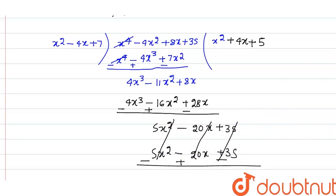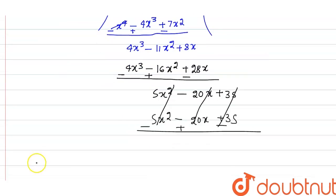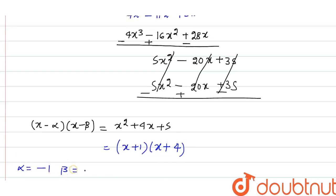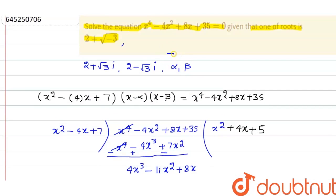So (x minus alpha)(x minus beta) equals x squared plus 5x plus 4, which factors as (x plus 1)(x plus 4). Therefore alpha equals minus one and beta equals minus four. Our other two roots are minus one and minus four.